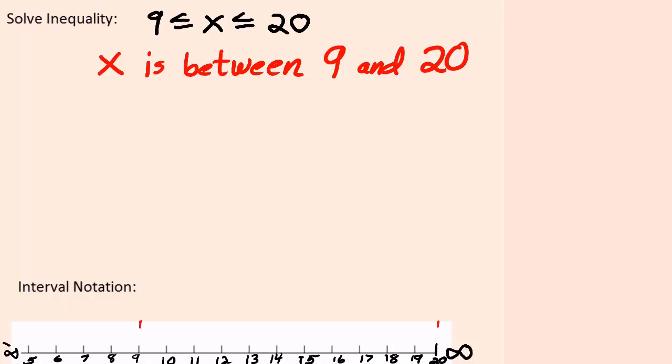Now there's 9 and there's 20. I put a bracket at 9 and a bracket at 20 and notice the brackets are enclosing the numbers that x can equal. And I connect up the two brackets.